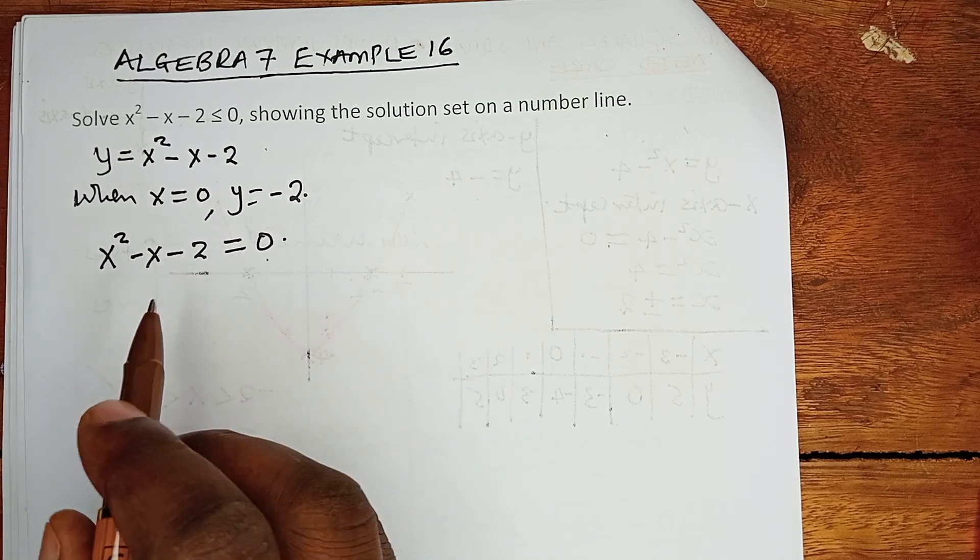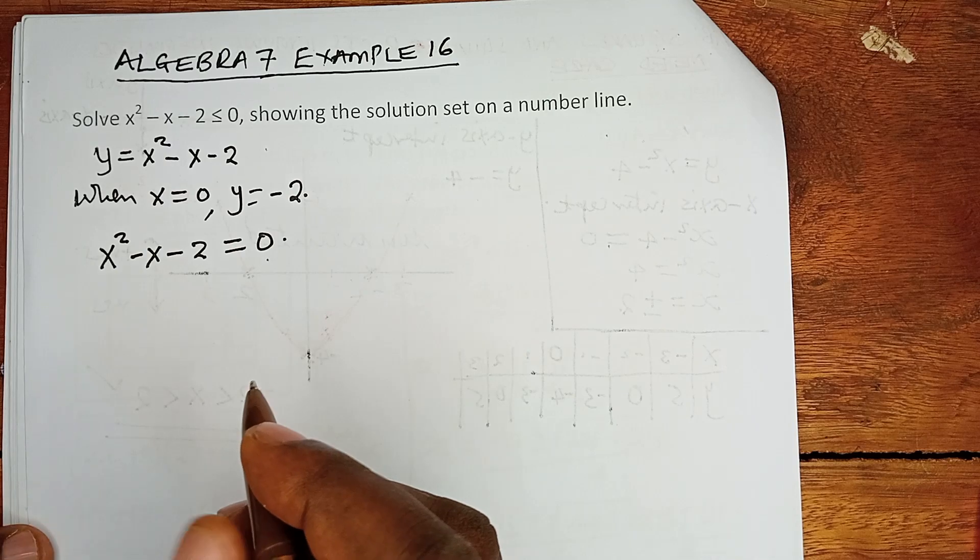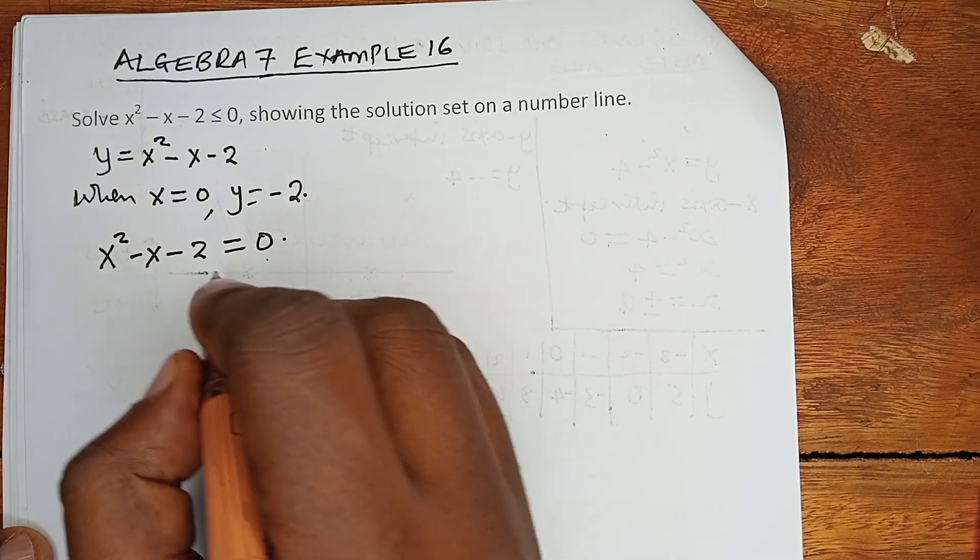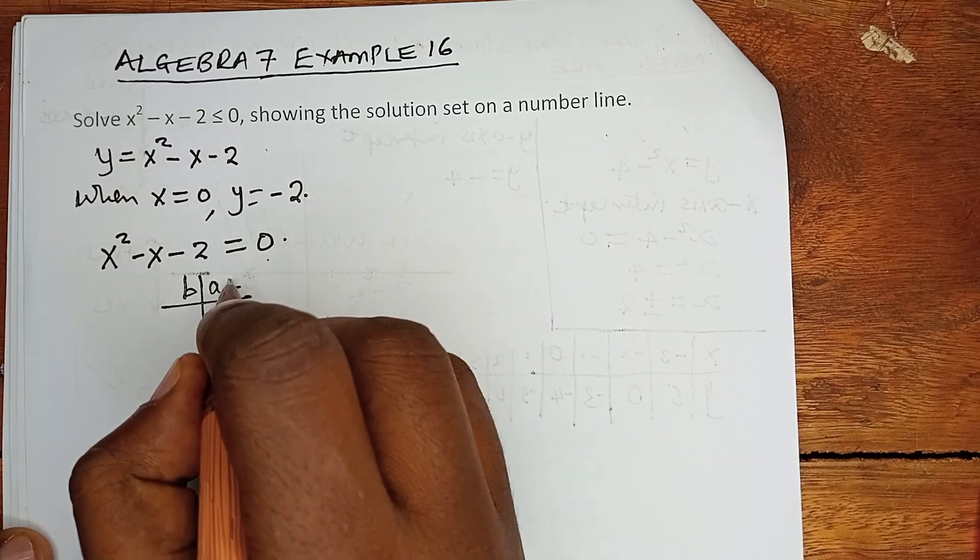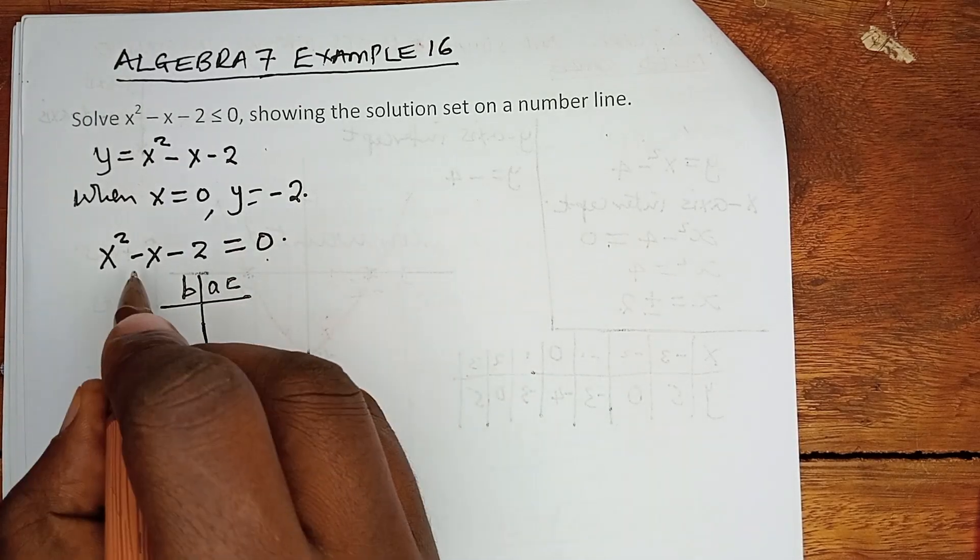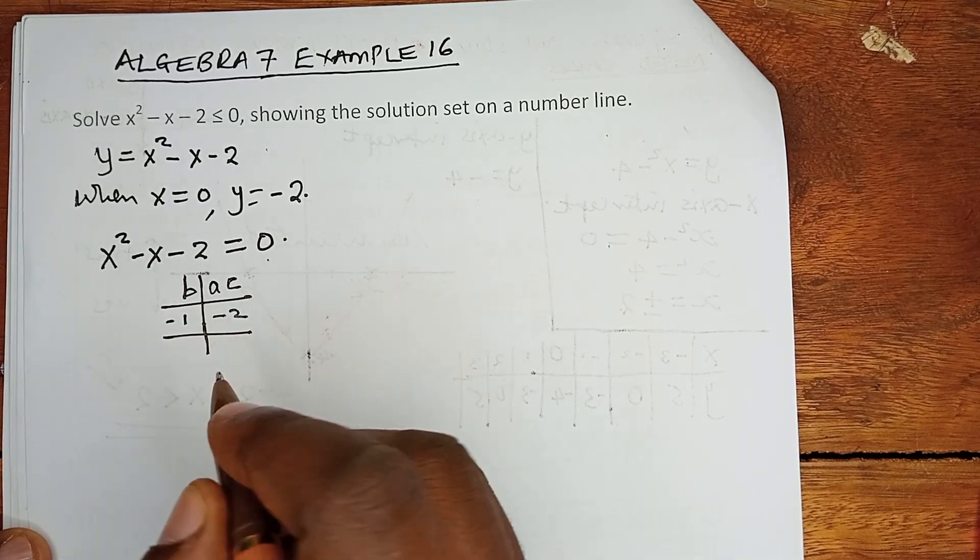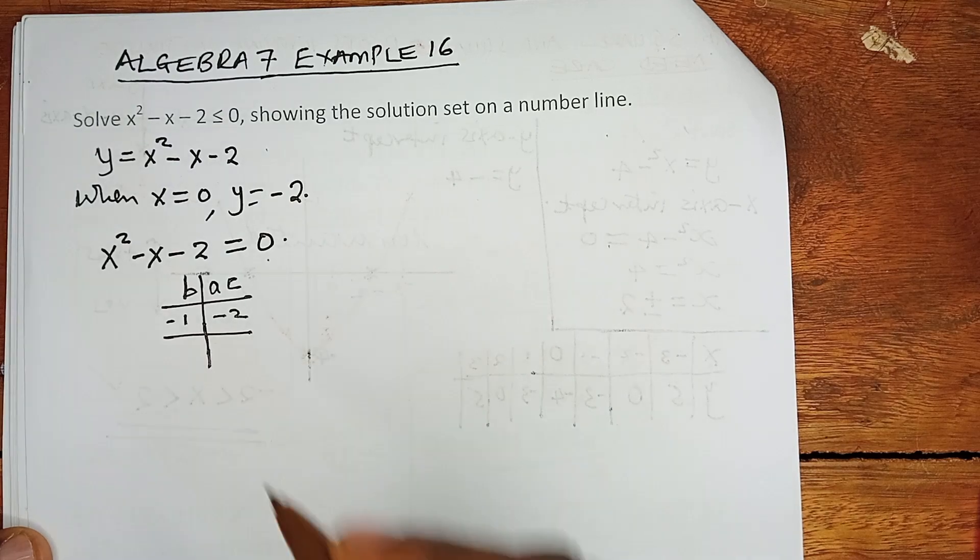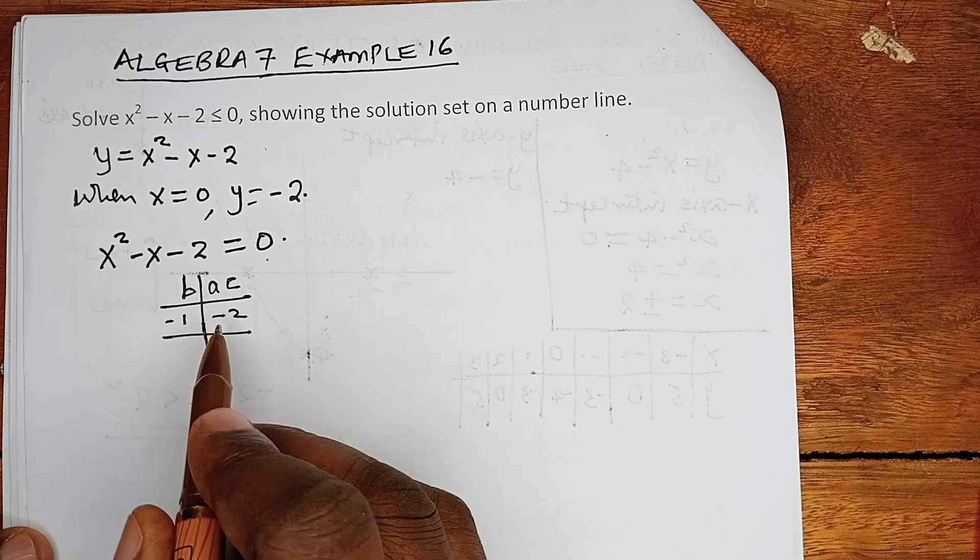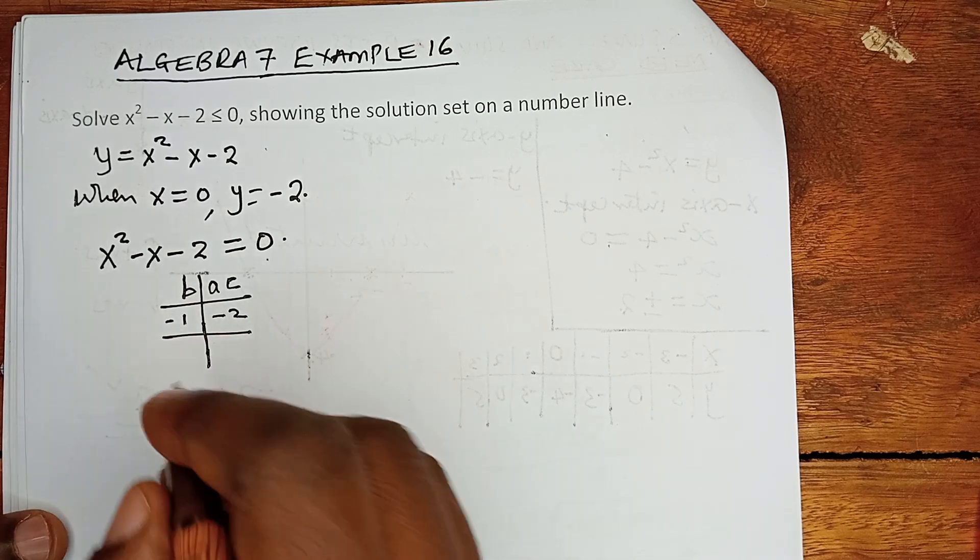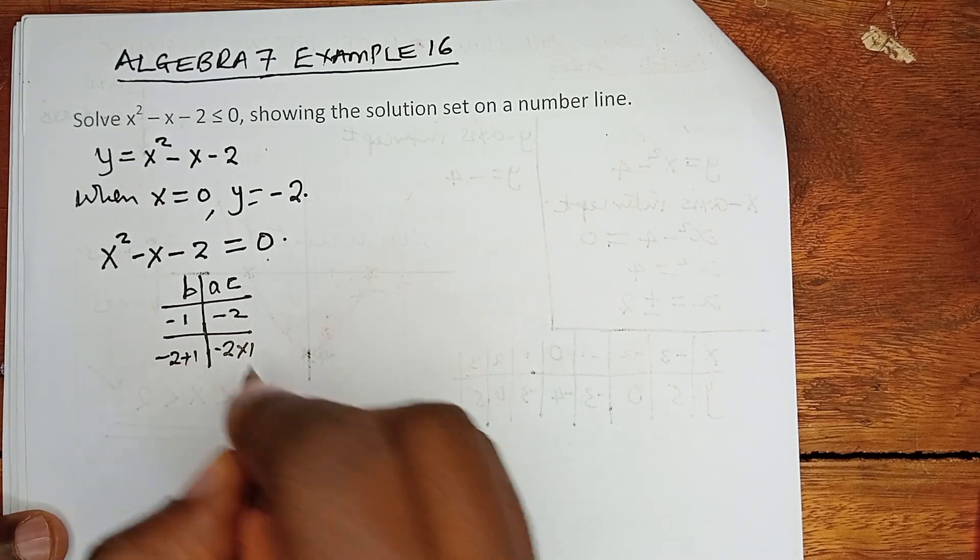This is just a general quadratic equation. Let's pick BAC approach, whereby our B is negative 1 and our AC is negative 2. Which two numbers do we add? They give us negative 1, and when we multiply, they give us negative 2.